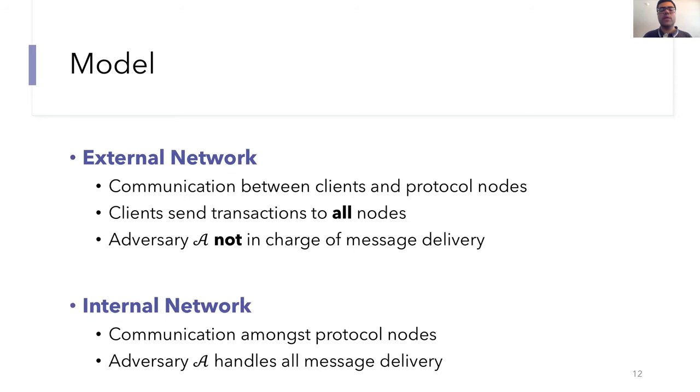In terms of the communication, we model two different kinds of networks, an external network and an internal network. So the external network is the communication channel between the clients and the consensus nodes. And the internal network is the one that's usually modeled in literature, and it's the channel amongst the consensus nodes. For the external network, we assume that the clients send their transactions to all of the nodes instead of just one leader node.